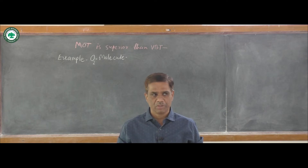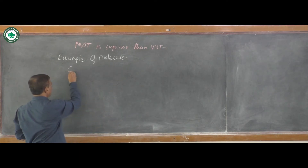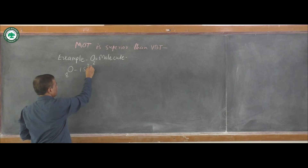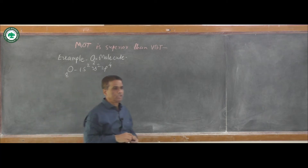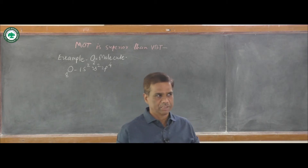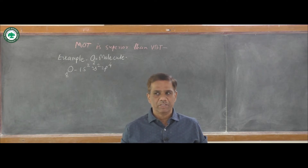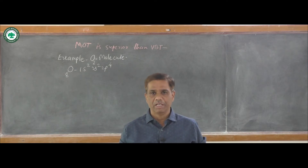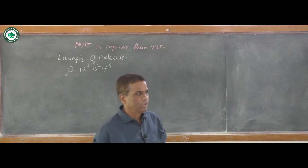You know that oxygen molecule O2 is formed by the combination of two oxygen atoms. Oxygen has atomic number 8 and ground state electronic configuration is 1s2, 2s2, 2p4. In 1s orbital two electrons are there, in 2s orbital two electrons are there, and in 2p orbitals four electrons are there. The p orbitals are divided into three types: px, py, and pz.